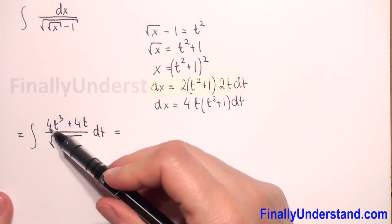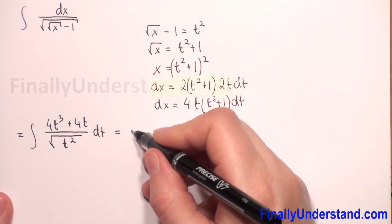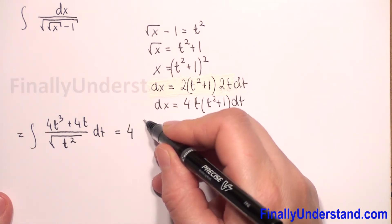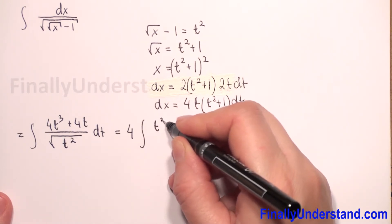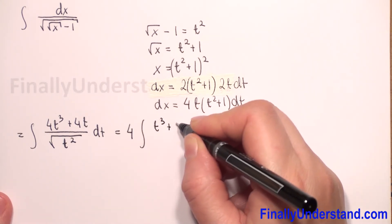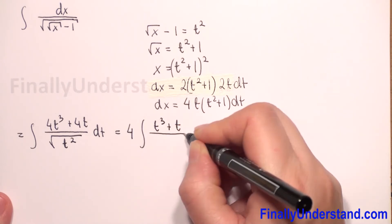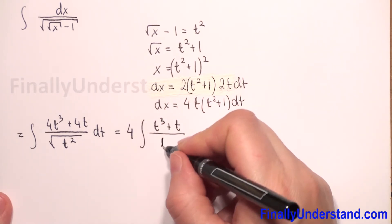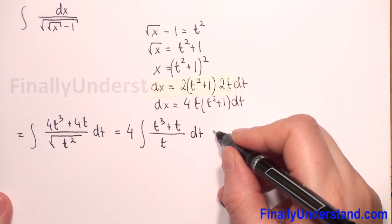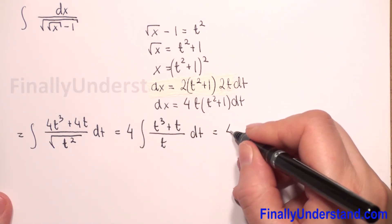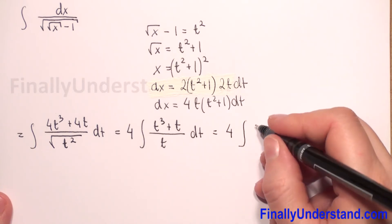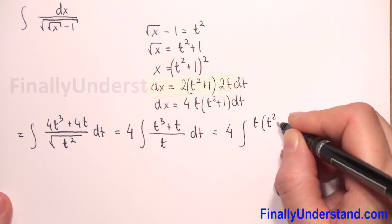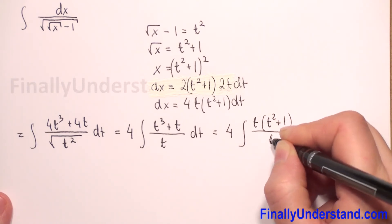This is equal to 4 times the integral — we can factor out the 4 in the numerator and place it before the integral symbol. So we will have t cubed plus t over square root of t squared, which is t, dt. This is equal to 4 times the integral of t squared plus 1 over t.